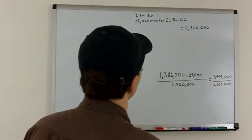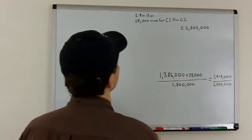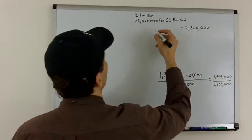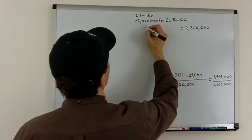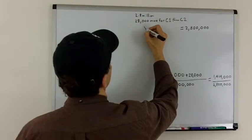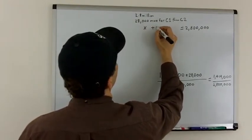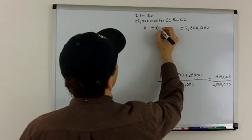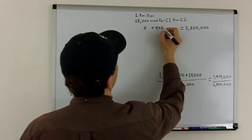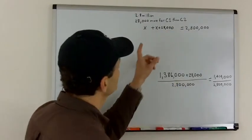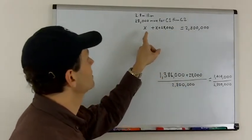Now, if we assume that Candidate 2 had X votes, then Candidate 1 would have X plus 28,000. And I know that's a little bit tricky, but that's what's going on here.